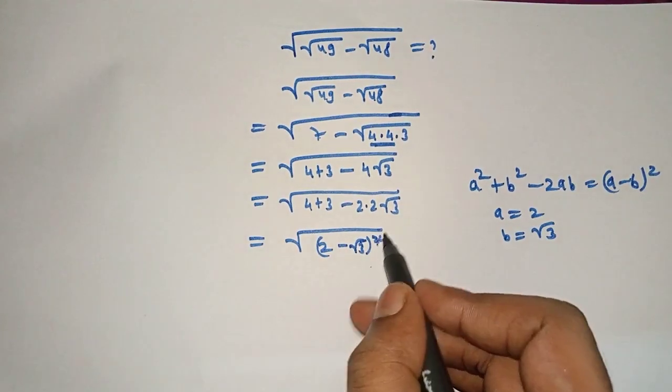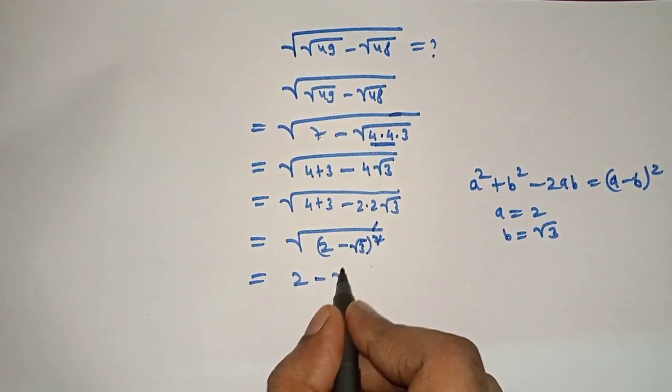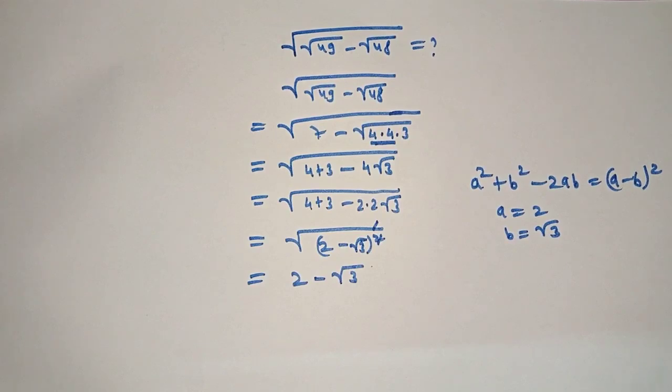Here square and square root cancels and the answer will come 2 minus square root of 3. This is our right answer. If you like my video subscribe to my channel. Thank you.